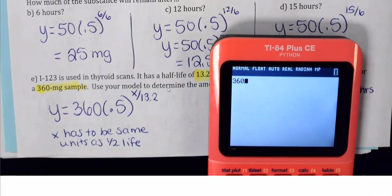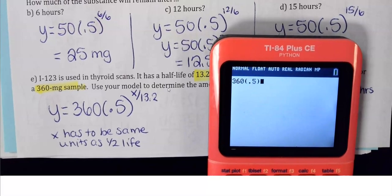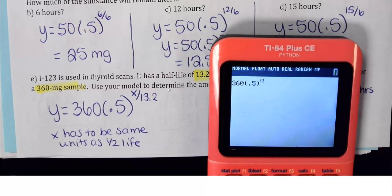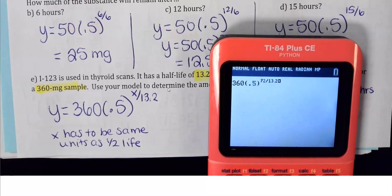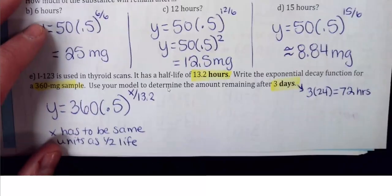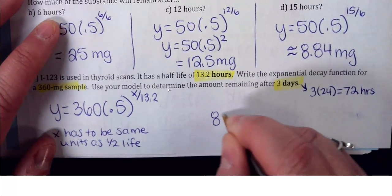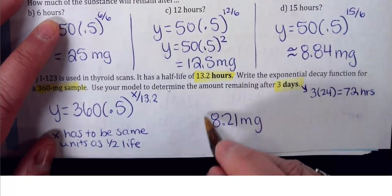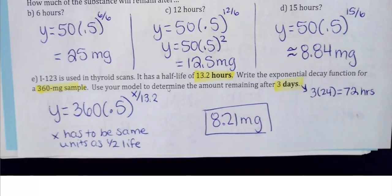Plug in x equals 72: calculate 360 times 0.5 to the power of (72 divided by 13.2). On a calculator, put parentheses around 72 divided by 13.2 after the caret button. After three days, approximately 8.21 milligrams of the substance remain. If you're not getting that answer, let me know and I'll help you with your calculator.